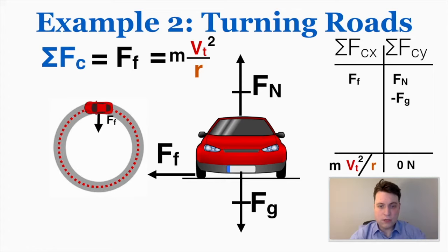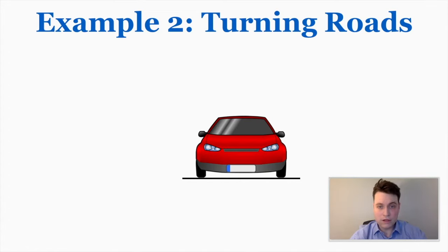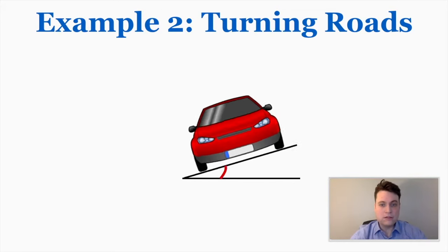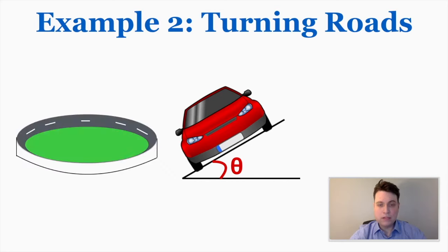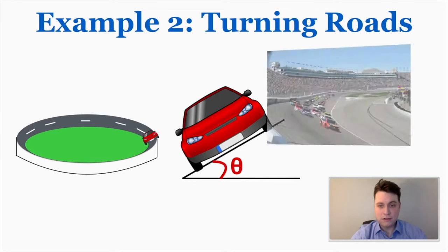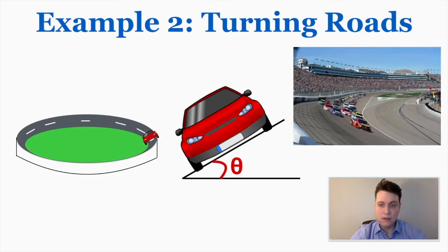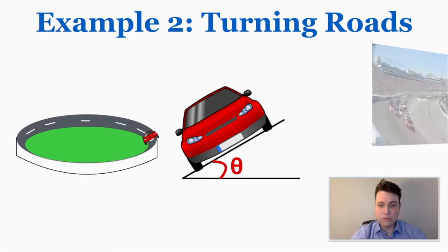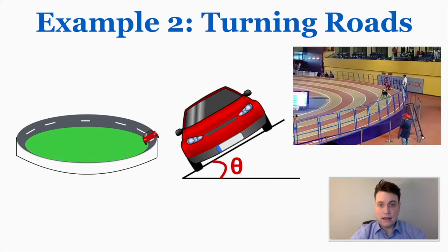Now I'm going to change this situation: a banked road, where the road is angled to help the car make the turn. This is a very common problem in IB physics. NASCAR tracks are banked so cars can more easily turn, and many school running tracks are also banked — runners find it much easier to make the turn on the bank than on a flat track. So why is it easier? What force situation causes this?